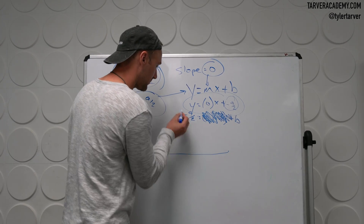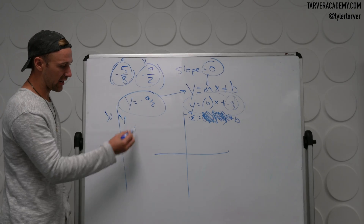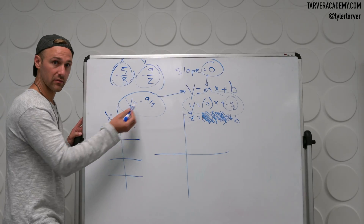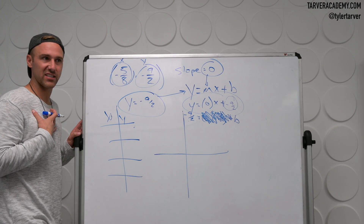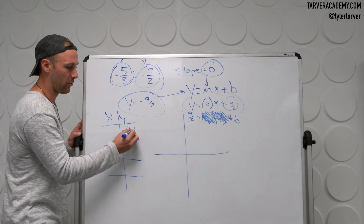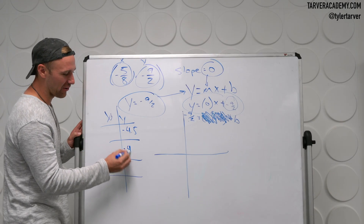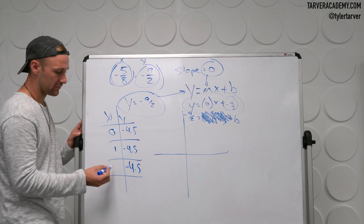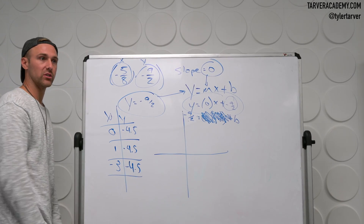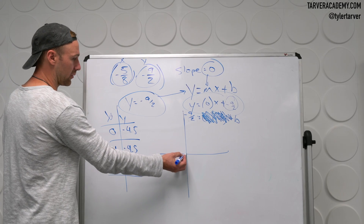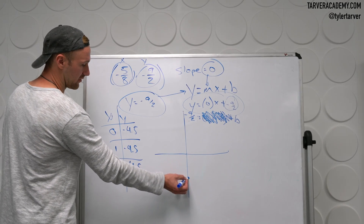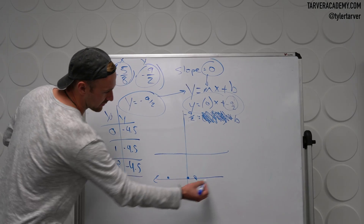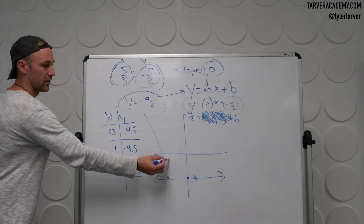Whenever we plot that, one of the ways is people just pick points and put them in. We know our y's are always going to be negative nine over two, which as a decimal is negative 4.5. And so we know it's always going to be negative 4.5. What do we want our x's to be? It doesn't matter — it's always y equals that. So that's why it looks like a straight horizontal line. X equals zero, down 4.5; over one, down 4.5; back three, down 4.5. That's what our line looks like. It's the equation of that line.